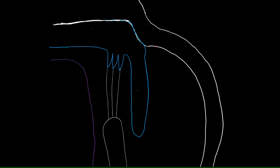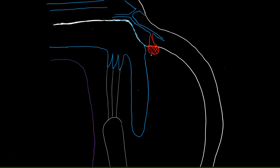Tracing pathway one: the trabecular meshwork opens into the canal of Schlemm, which opens into the aqueous veins, which then drain into the larger episcleral veins. So the full route is: trabecular meshwork → canal of Schlemm → aqueous veins → episcleral veins. This pathway drains 90% of the aqueous humor.